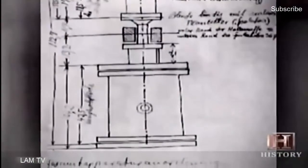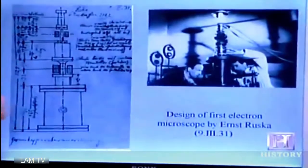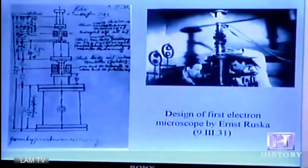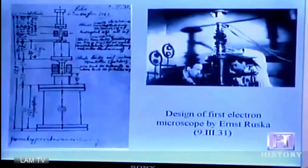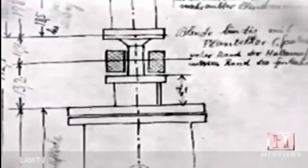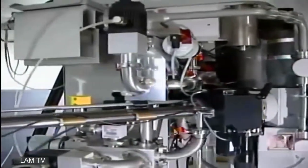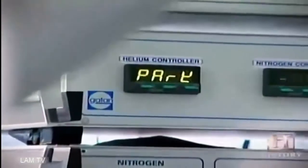Ruska's genius was the discovery that a magnetic coil could act as a lens to focus an electron beam. Here on this PowerPoint presentation is a picture of the design of the first microscope that had more than one lens, dated 9th of March 1931. Those crossed-through areas are actual magnetic lenses. His principal invention was to concentrate the magnetic field into a very narrow gap, creating a very strong magnetic field and thus very strong lenses — and that is what made the high magnifications possible.